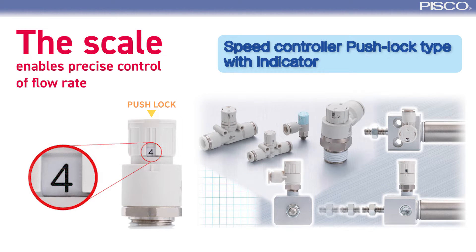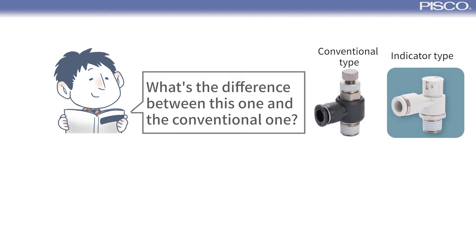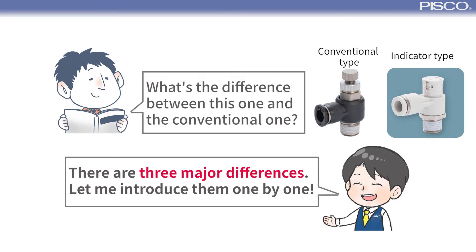Introducing the speed controller with indicator, which enables precise control of the flow rate with a scale. What's the difference between this one and the conventional one? There are three major differences. Let me explain them one by one.